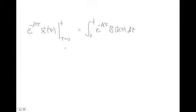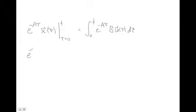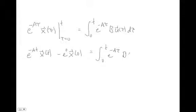Remember that integrating a derivative just means evaluating the function at the two limits. So integrating d/dt gives us e^(-At)·x(t) minus e^(0)·x(0) on the left, and the integral on the right unchanged. We acknowledge that e^0 is the identity matrix, and now we pre-multiply both sides by e^(At).